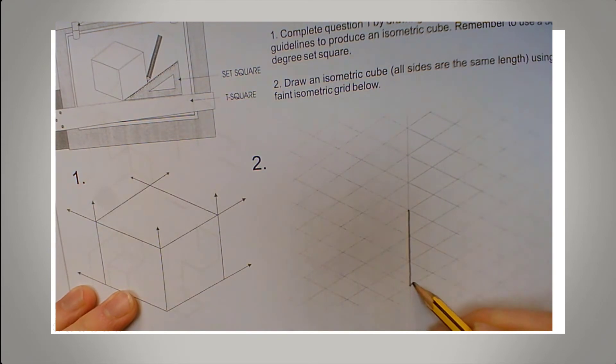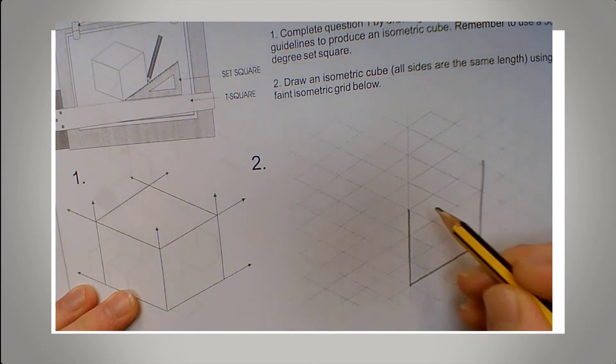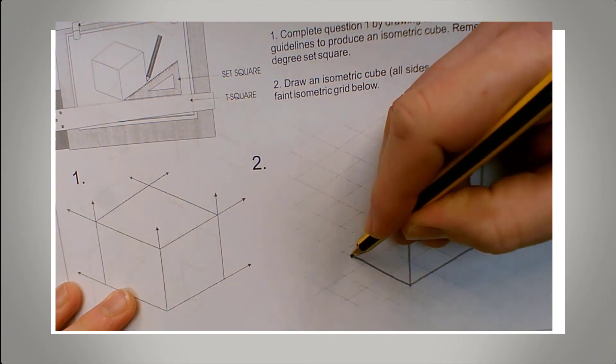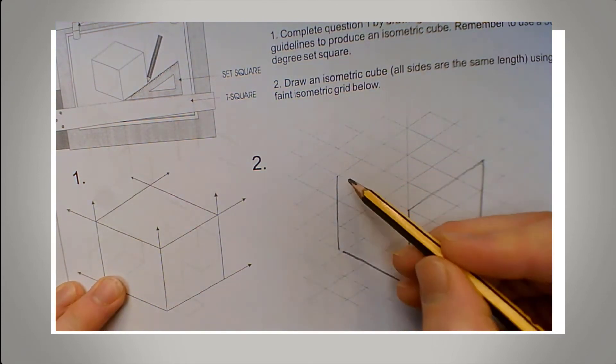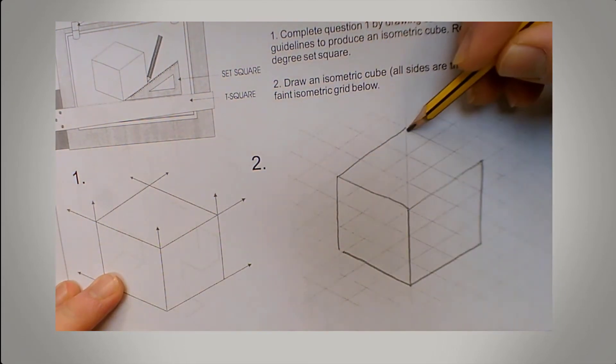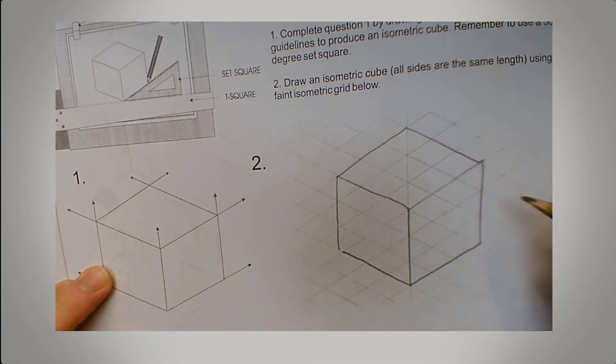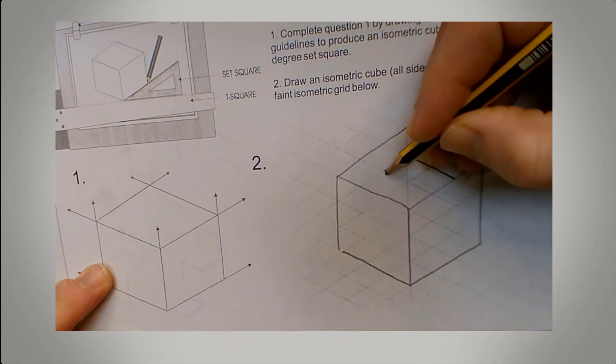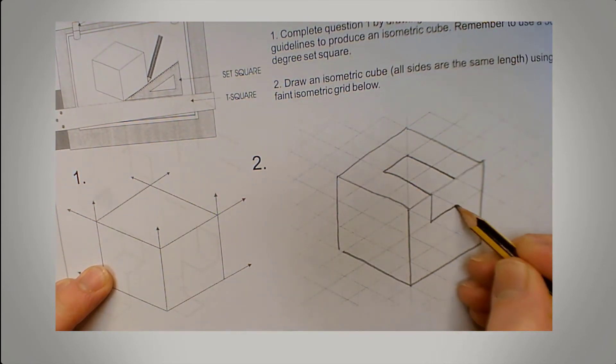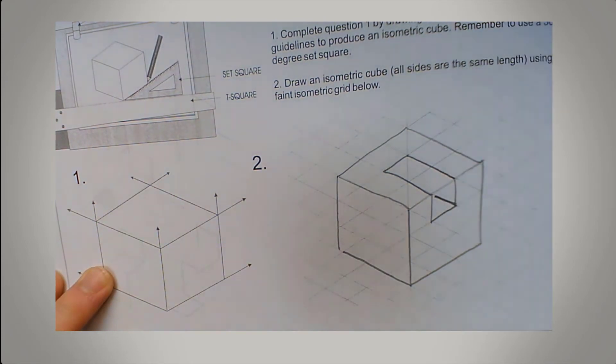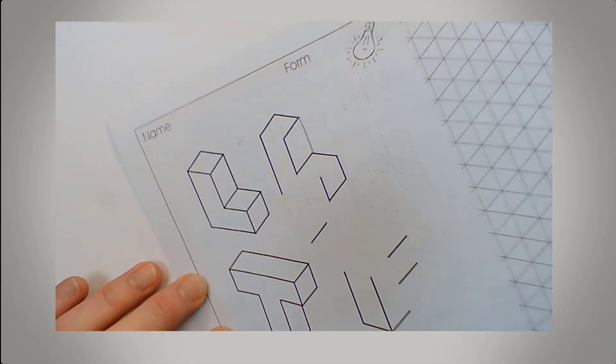In your graphics book this is the first task for you to do. There's an isometric grid that you can follow. What I want you to do is to draw a cube and then once you've got that right I want you to try and take away a section, a cuboid section. So that in this case I've just taken a cutting from the middle of the top. You could take a section out wherever you want.